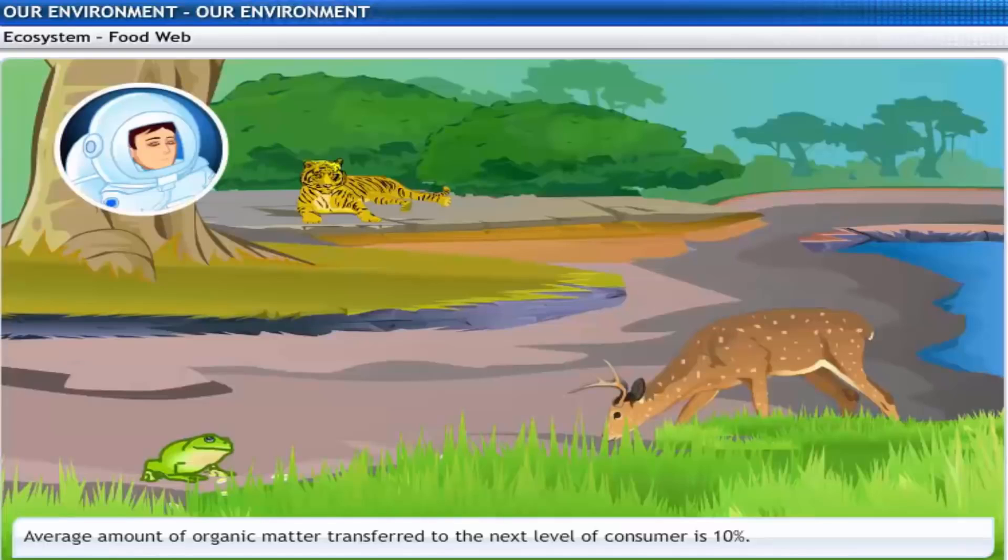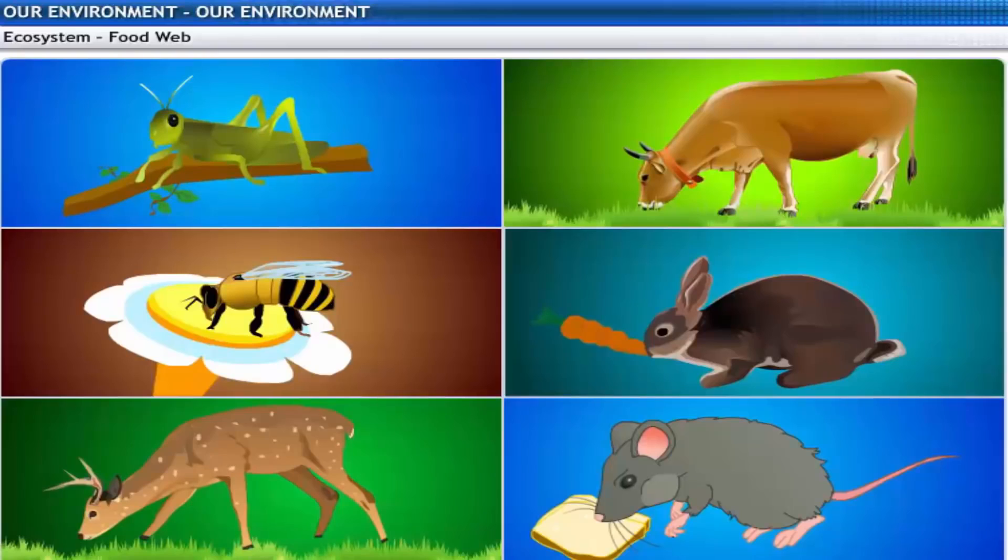With only 10% of energy reaching the next level, isn't it difficult to manage the ecosystem? Well, it certainly limits the number of trophic levels in a food chain. There are generally a greater number of individuals at the lower trophic levels of an ecosystem.